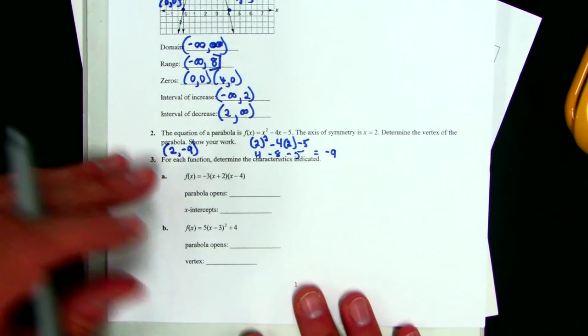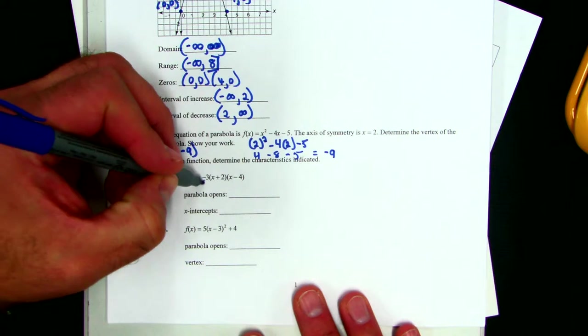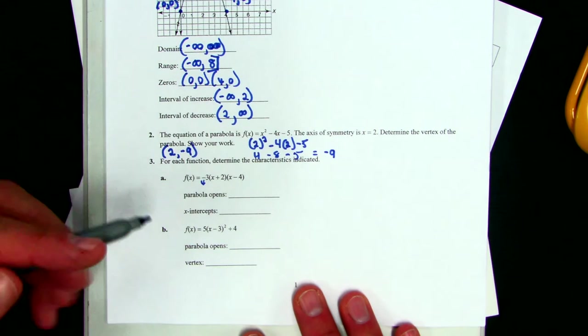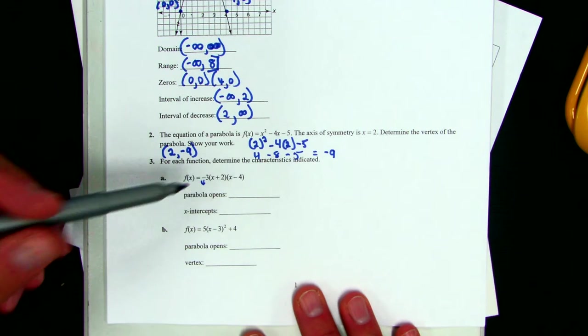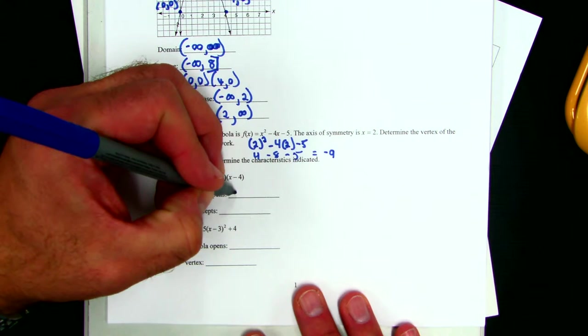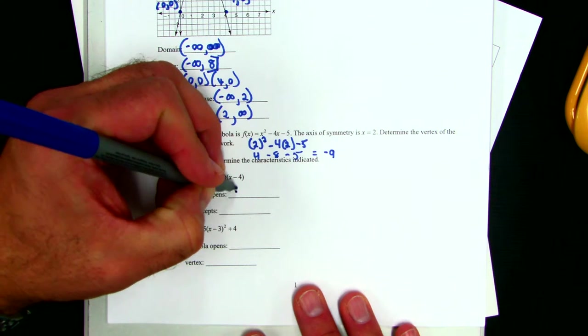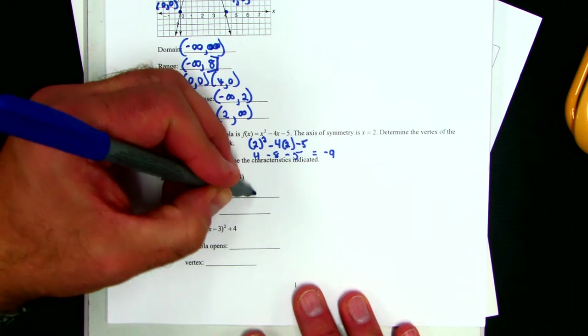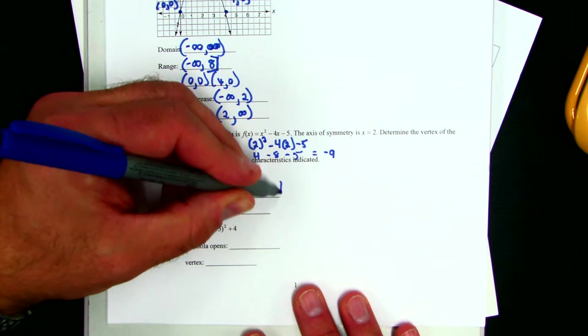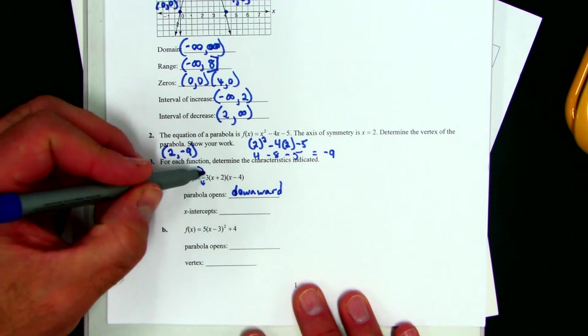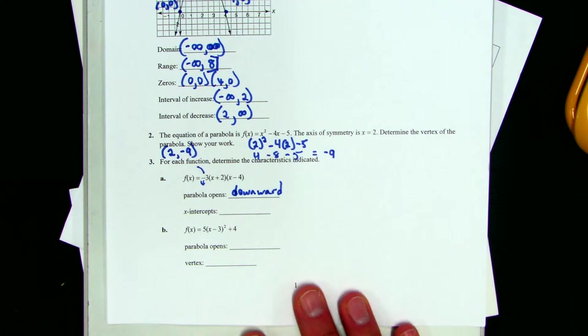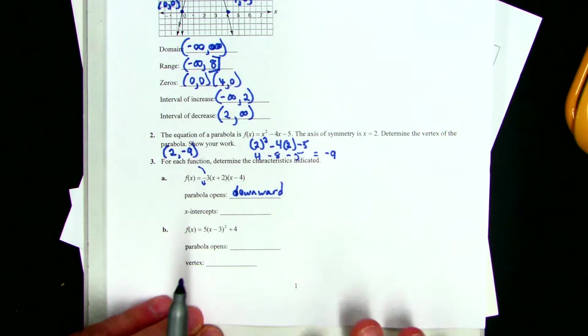This is easy. This parabola opens down because of the negative. And we learned today that that's actually a reflection. So we open downward. We also learned today that that is called a what? The 3 is called a contraction, right? That's where the parabola gets skinnier.